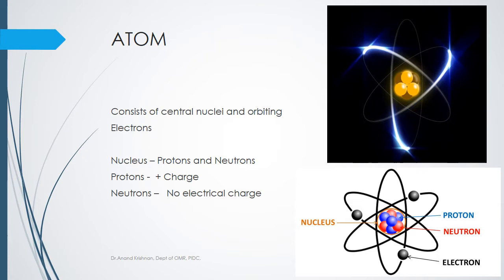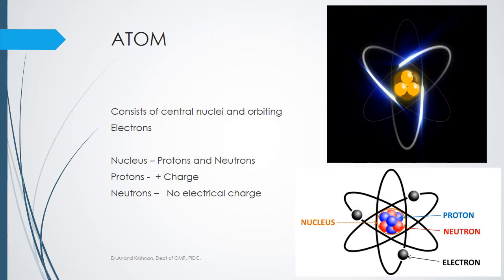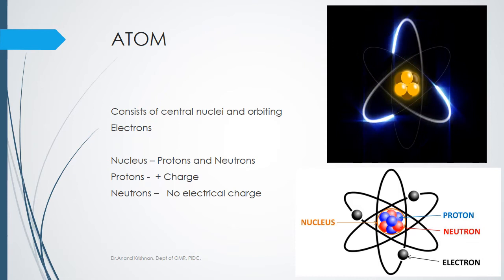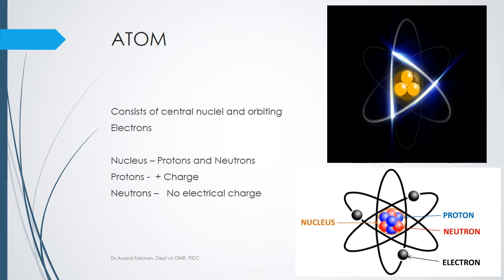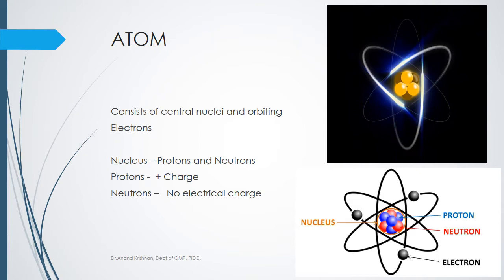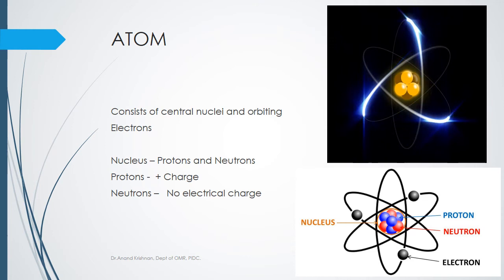For the ionizing radiation part, atoms are the basic units of matter and define the structure of elements. The word 'atom' comes from a Greek word meaning indivisible. The atom has a central nucleus and electrons revolving around it. The central nucleus consists of protons and neutrons — protons have a positive charge and neutrons have no charge.